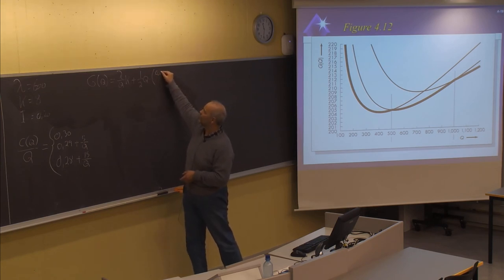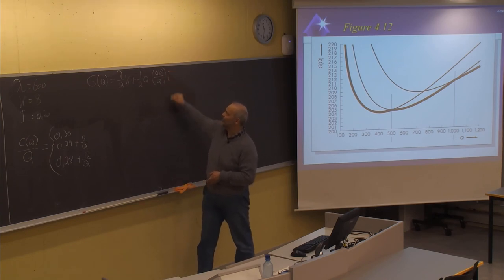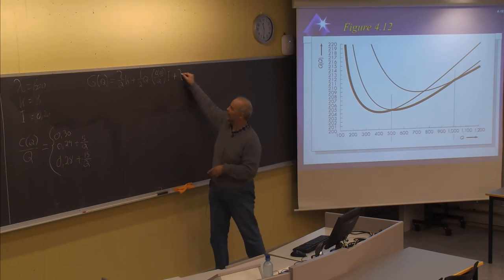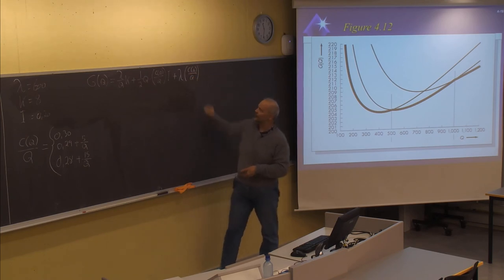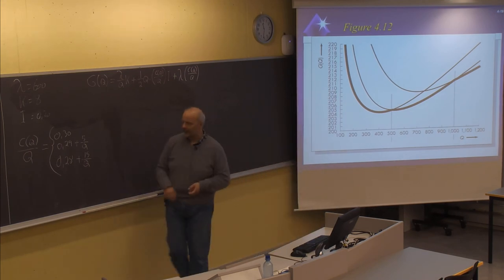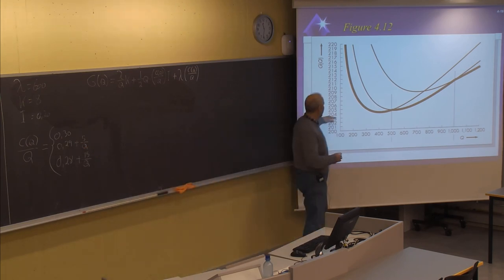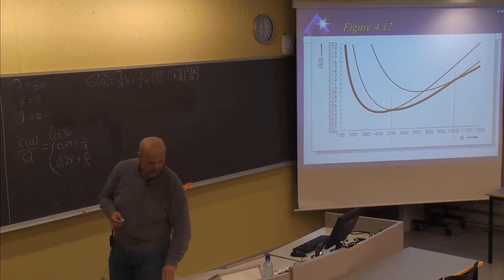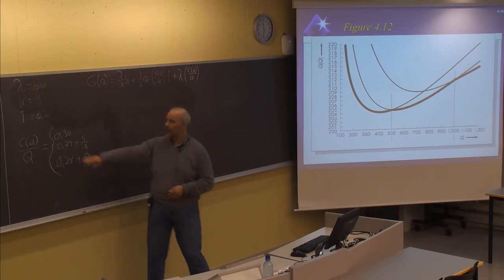The purchase cost also needs to be included, which is demand multiplied by the unit cost C(Q) divided by Q. We recall that in this case the optimal order size was 400 with a cost of 204. We don't need to calculate that again. Now let's try to see what happens if we use this expression for the unit cost with the first discount option.